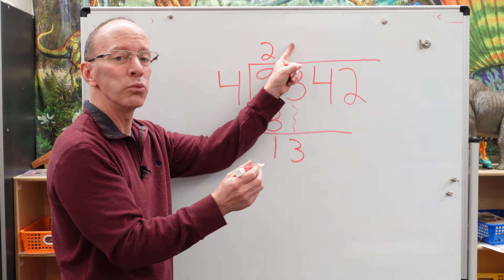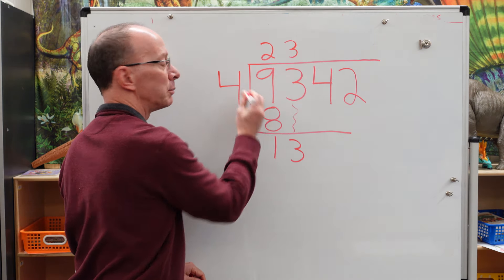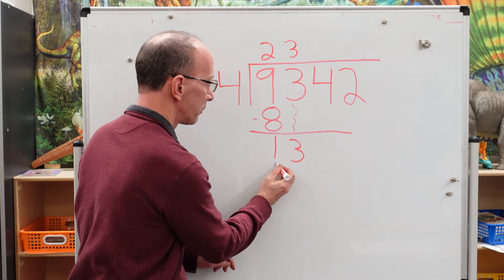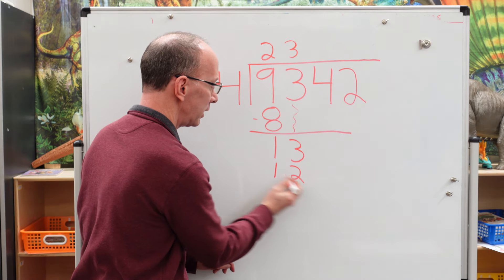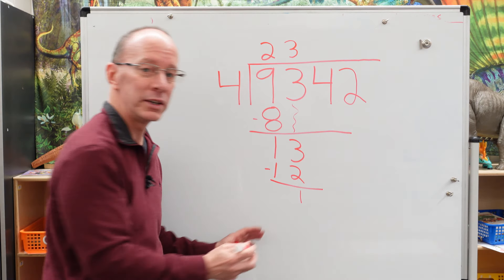We know four times four is going to go too high. I think four times three is a good number. So let's do that. Put that three right here, right above that number. That's what we're working with right here. So I take three times four is 12. All right. Again, we subtract. Just keep it going. Bring that one down there.